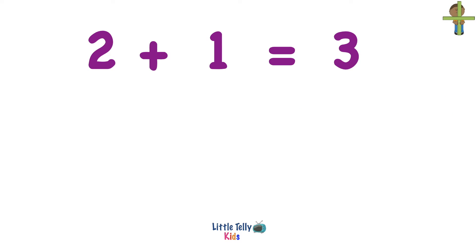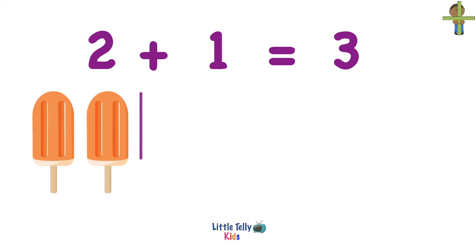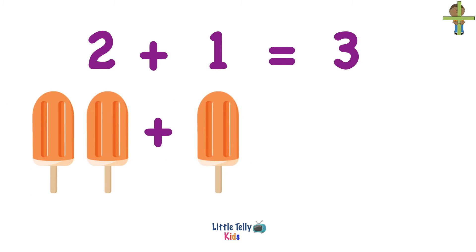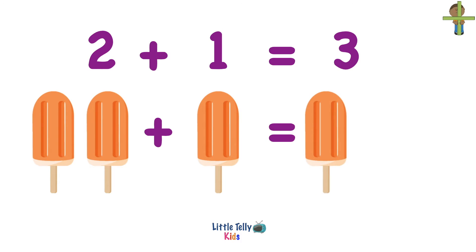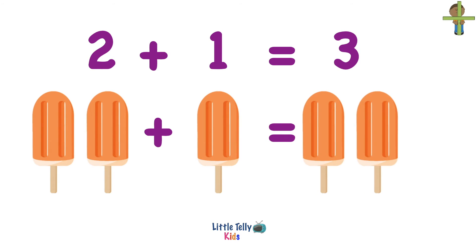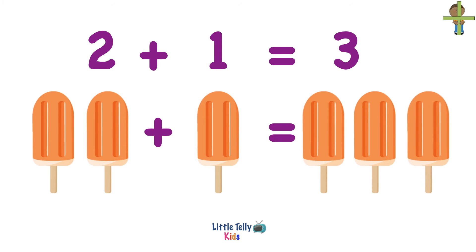Let's look at it once again. So, there are 2 popsicles. Now, one more popsicle comes in. How many popsicles are there? Two popsicles plus one more popsicle equals three popsicles.